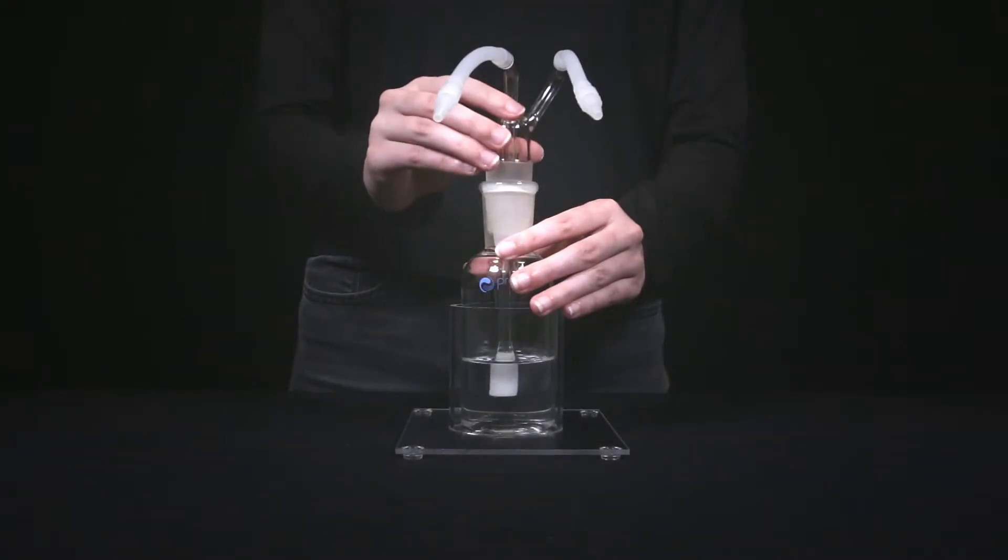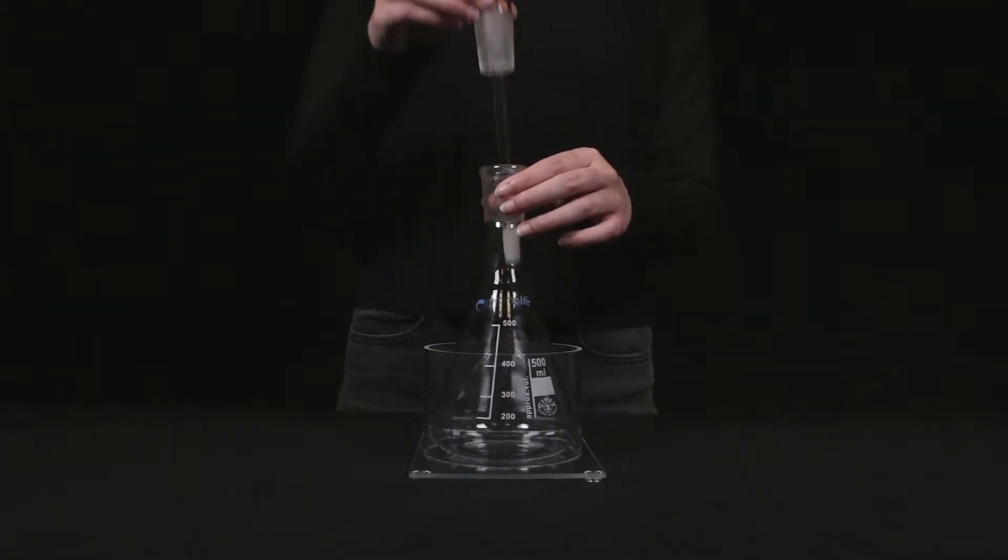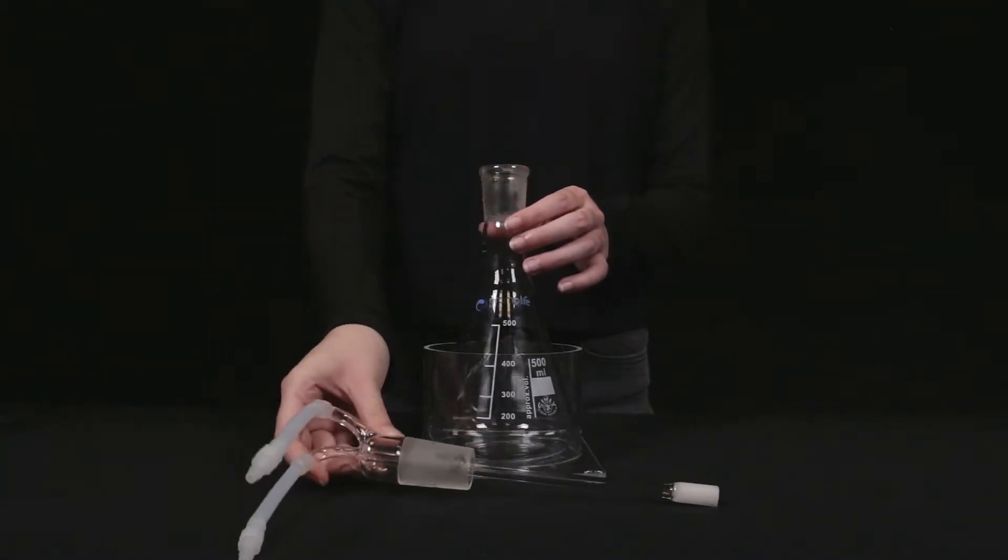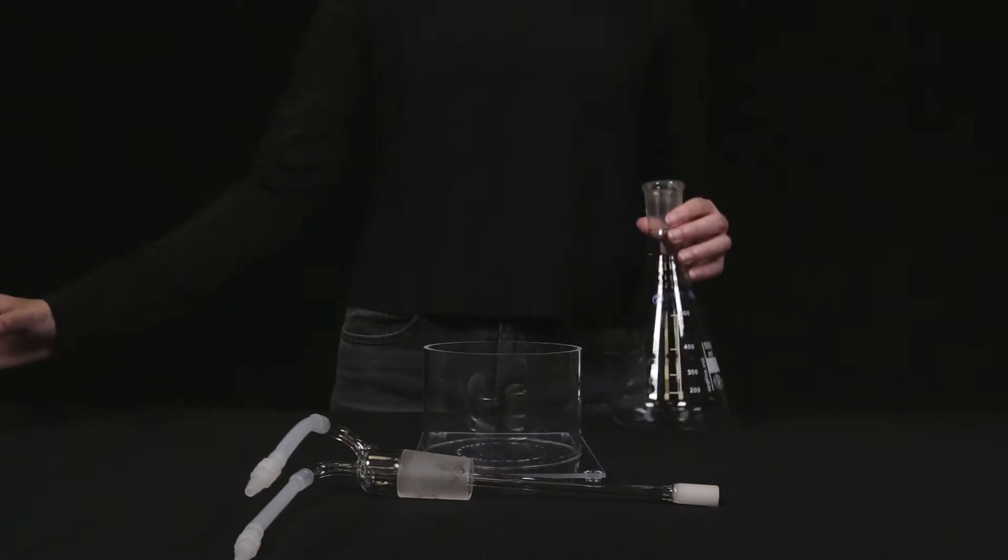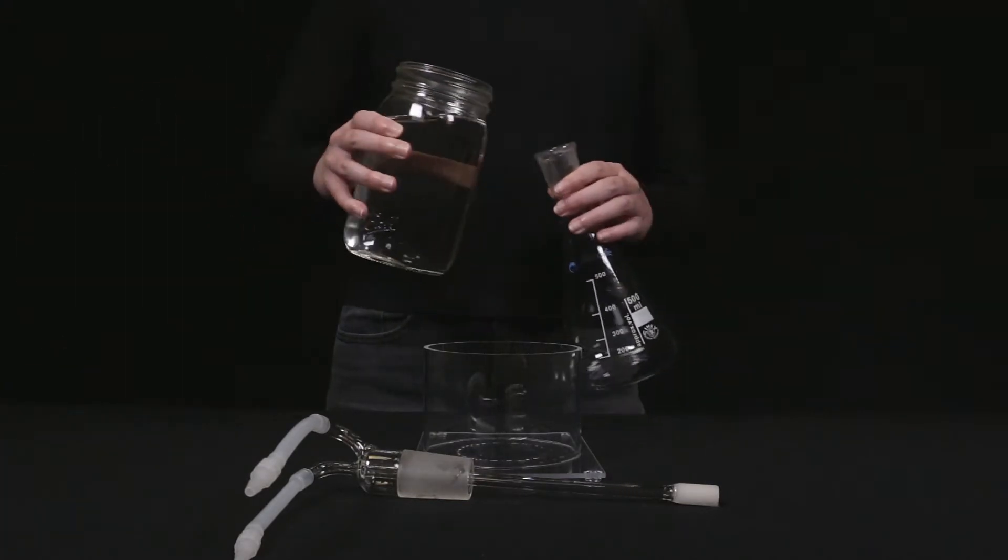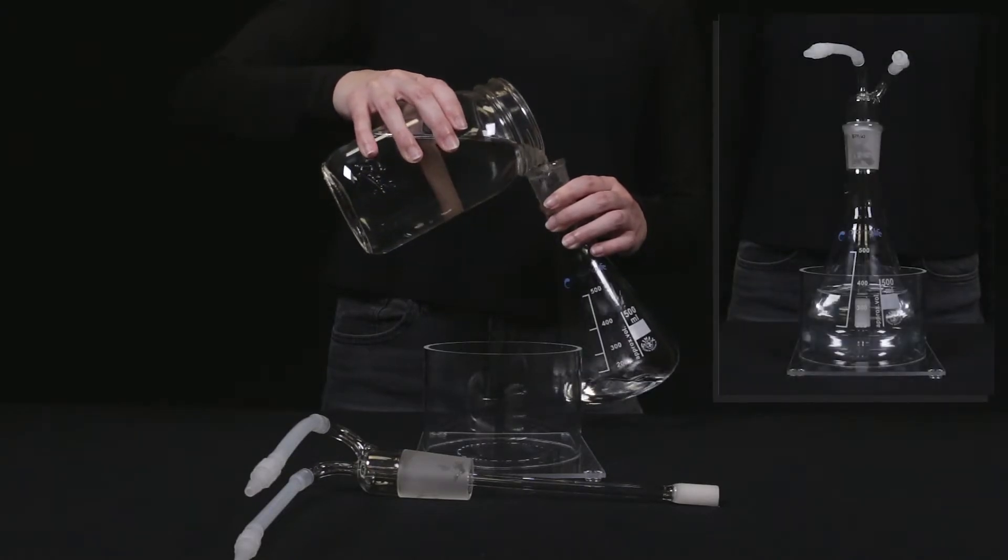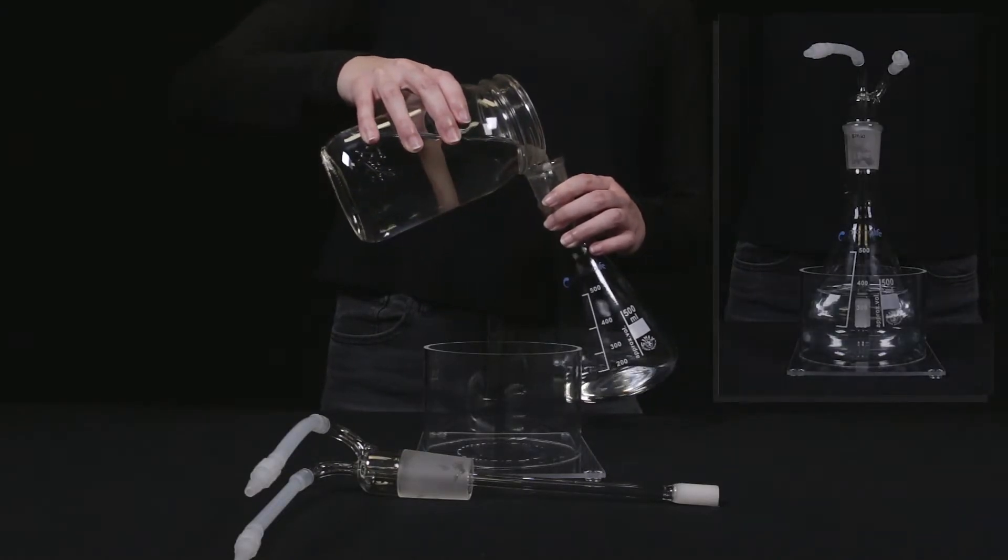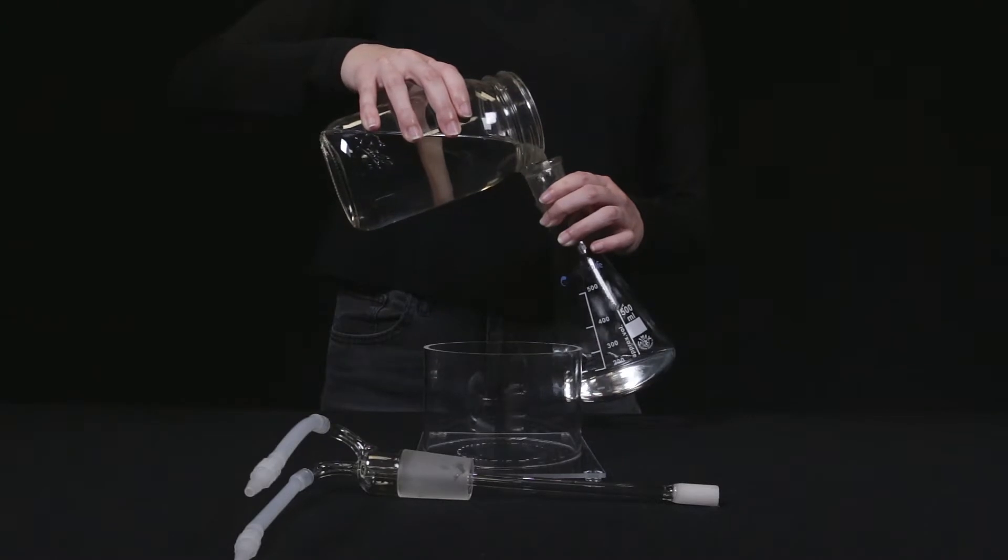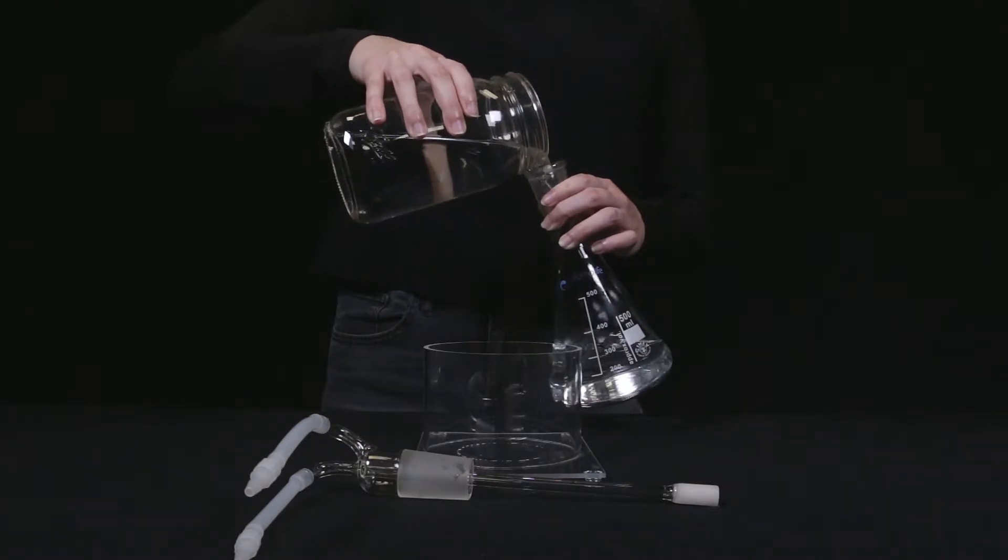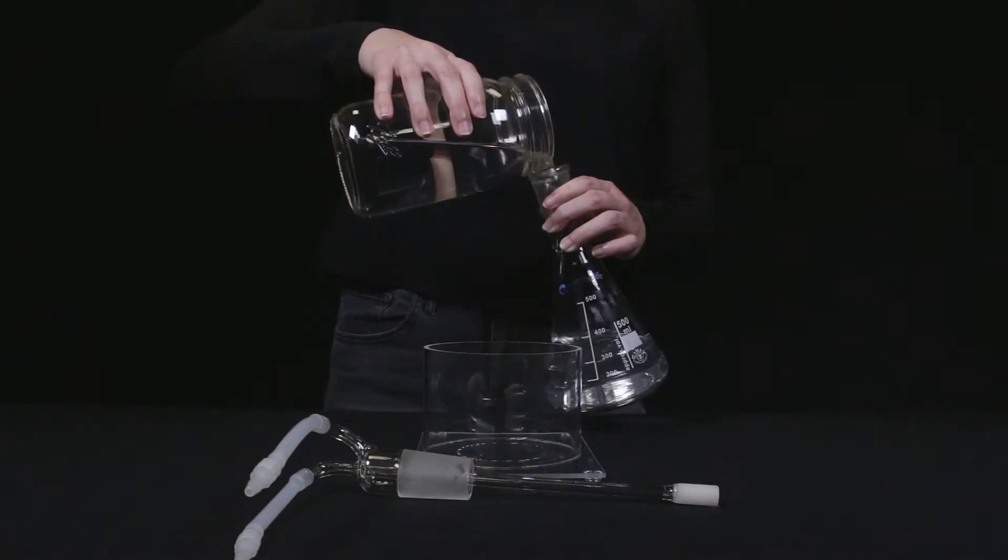For the case of the 500ml humidifier, you will replicate the same steps as before, but fill the jar to at least 200ml or until the diffuser, which is the white stone at the end of the stem, is covered as displayed here. This applies to the 500ml basic humidifier, 500ml ozone water bubbler humidifier combo, and the 1000ml ozone humidifier.